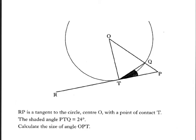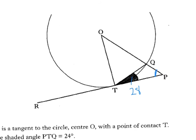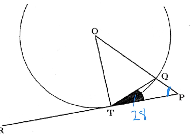Another one. We're told about a tangent. We are looking for angle OPT. The shaded angle tells you that it is 28. So O to Q is a radius, and O to T is also a radius. We know this is 28. Here is a radius meeting a tangent, which makes 90. So 90 take away 28 makes this one here 62. That's also 62 using symmetry.